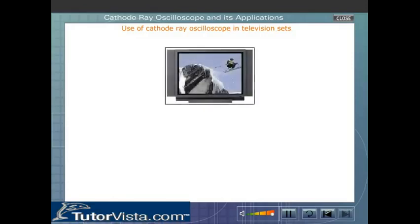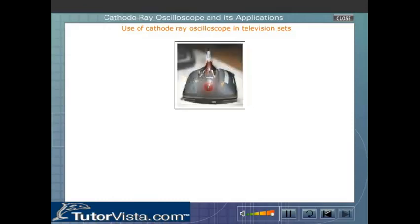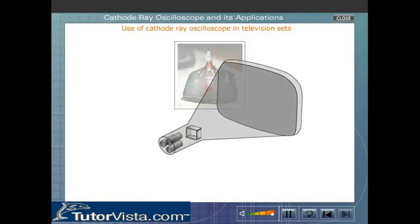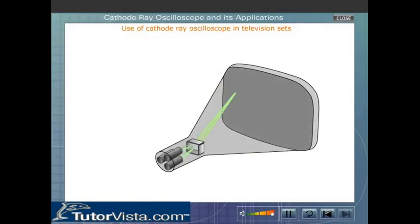In a television set, a cathode ray oscilloscope is used as the picture tube. The video signals sent from the TV transmitter are applied across the deflecting plates.